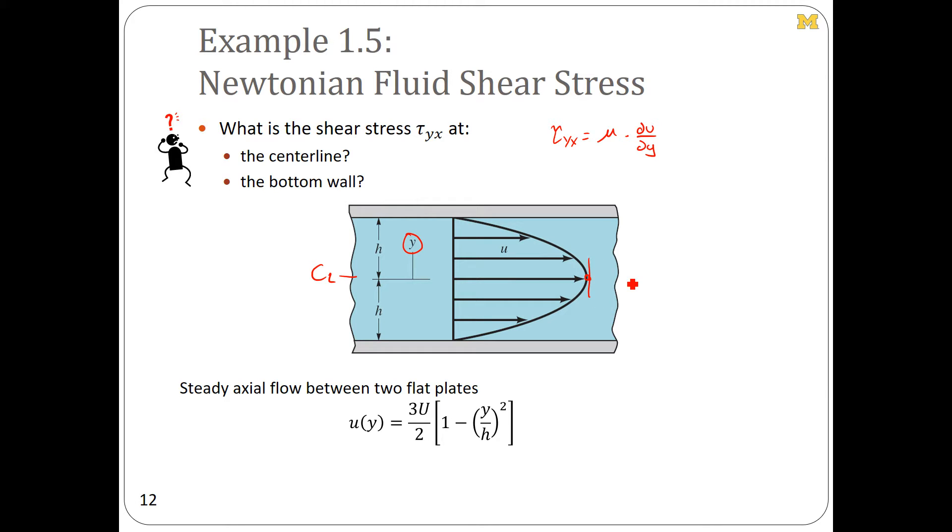At the centerline here, du/dy at y equals 0 is equal to 0. In other words, the slope is 0 along the centerline, and as a result, tau_yx along y equals 0 is also equal to 0. There is no shear stress between fluid particles along the centerline. At the wall here, whether it be here or here or here, it doesn't matter.